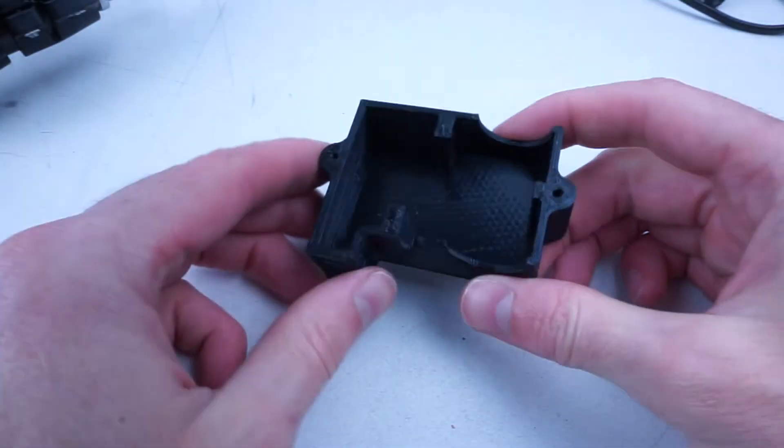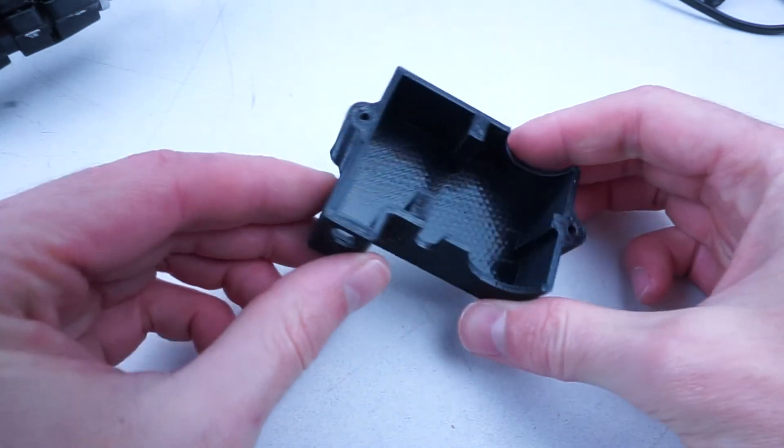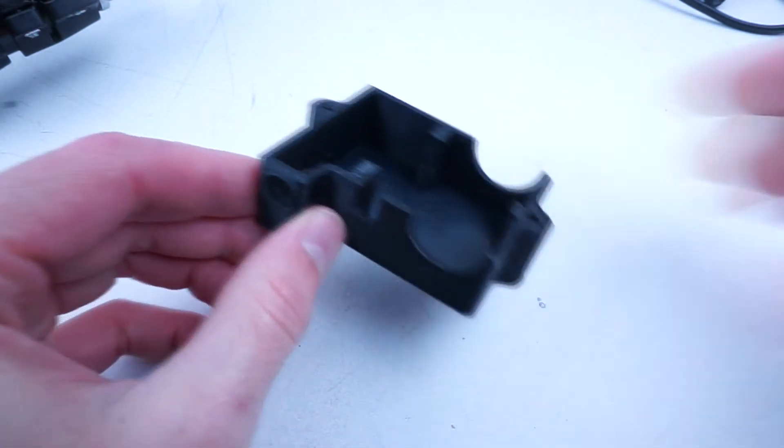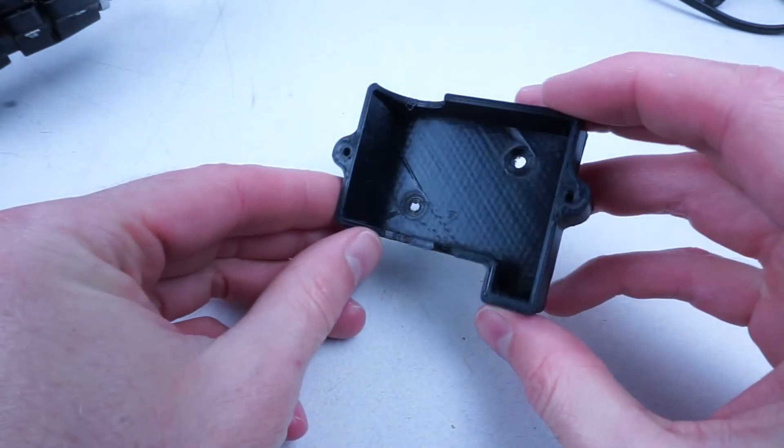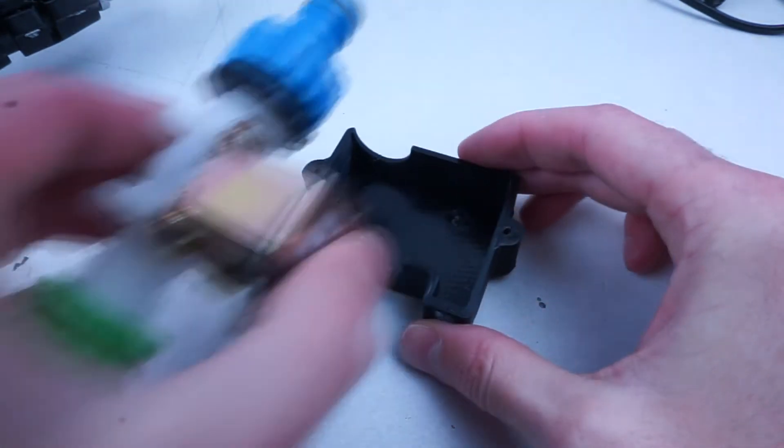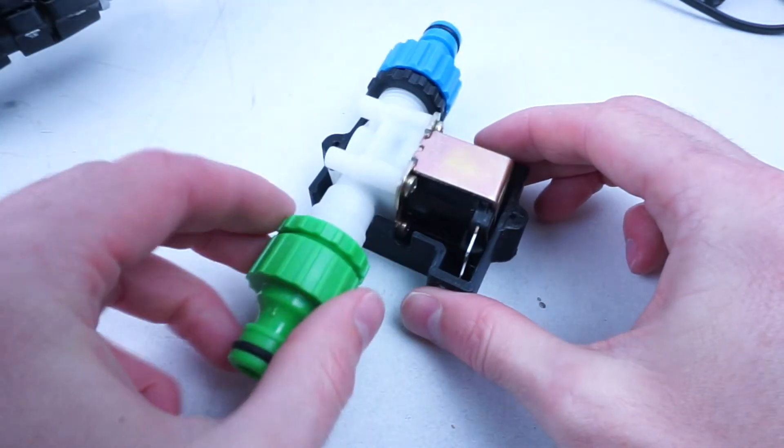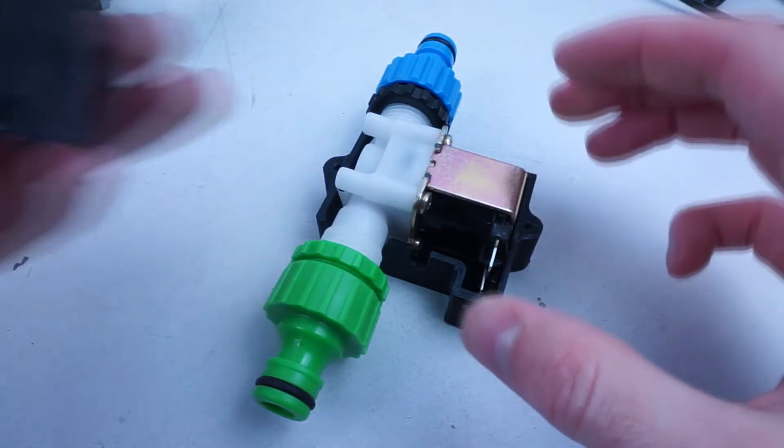The case is split in two parts, easily printed on small printers and requires no support if your printer is configured well. It was printed in PLA but ABS may be more suitable depending on its application, due to its higher heat tolerances.